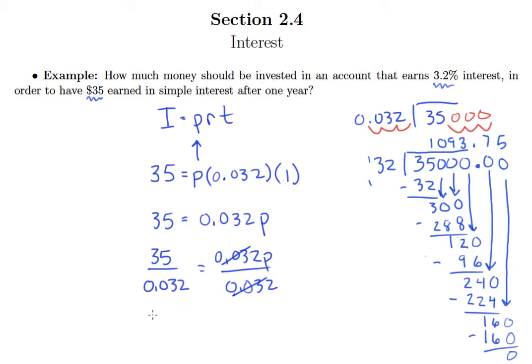So what we end up with is if we want to make $35 in simple interest after a year at 3.2% interest, we would need to invest $1093.75.